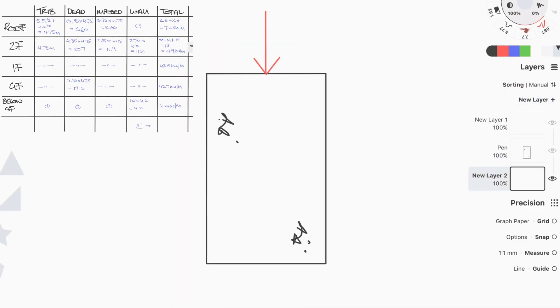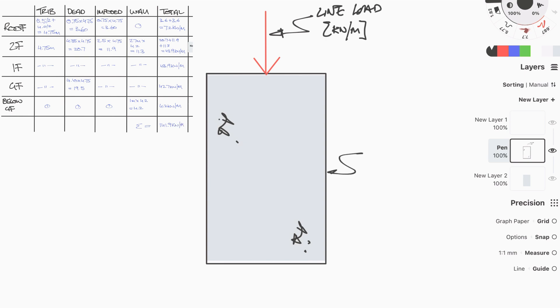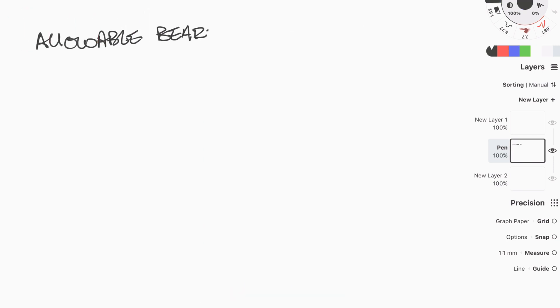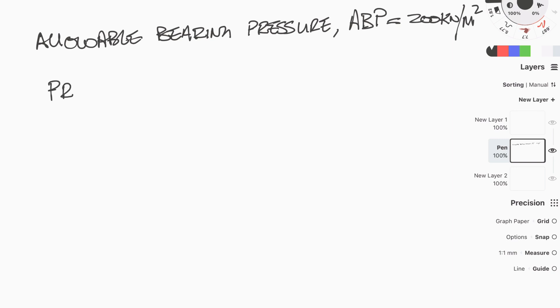If you've watched my video on how to calculate loads and load takedowns, this example follows straight on from that — if you haven't seen it, please check it out. In this example, the bearing strata is a very stiff clay with an allowable bearing pressure of 200 kPa at a founding depth of 1 meter. Note that kPa is the same as kilonewtons per meter squared, and pressure is the same as stress.